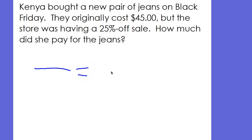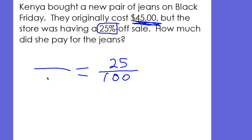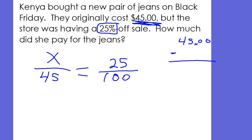First things first, I know I need my 100 here because I saw the word percent. And if you see a number right in front of the symbol, it has to go right above the 100. The original price is $45, and that goes right there on the bottom. How much she got as a discount is what we're trying to figure out. But we want to know what she paid for the jeans, so we're going to have to take the $45 and subtract whatever that discount is to find the final price.